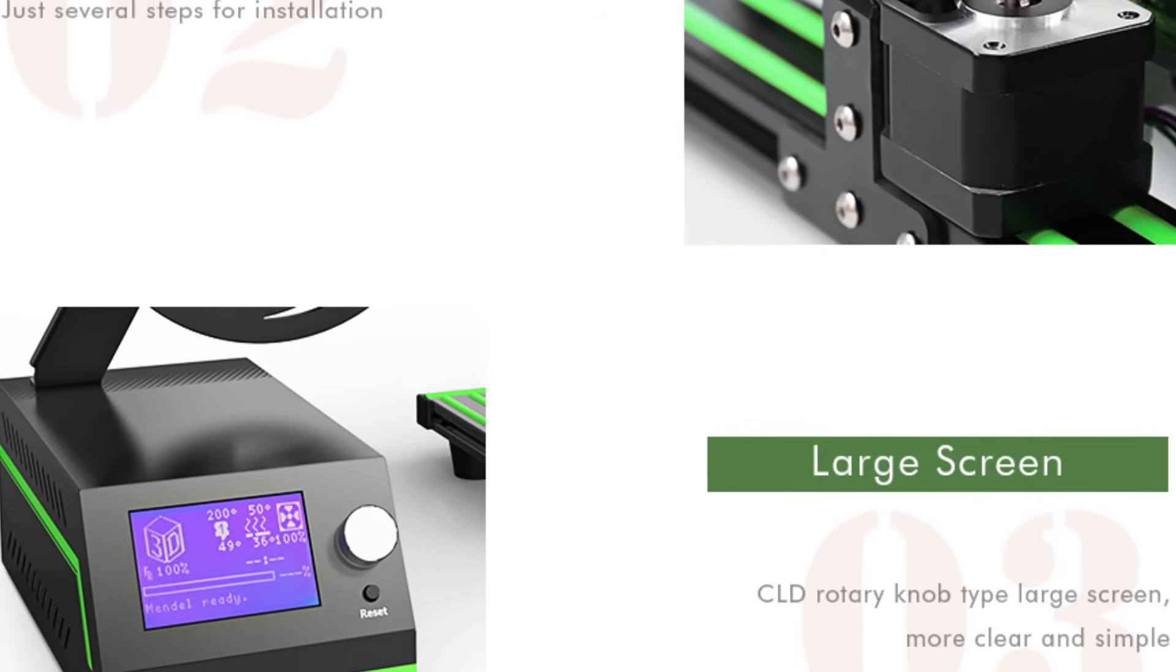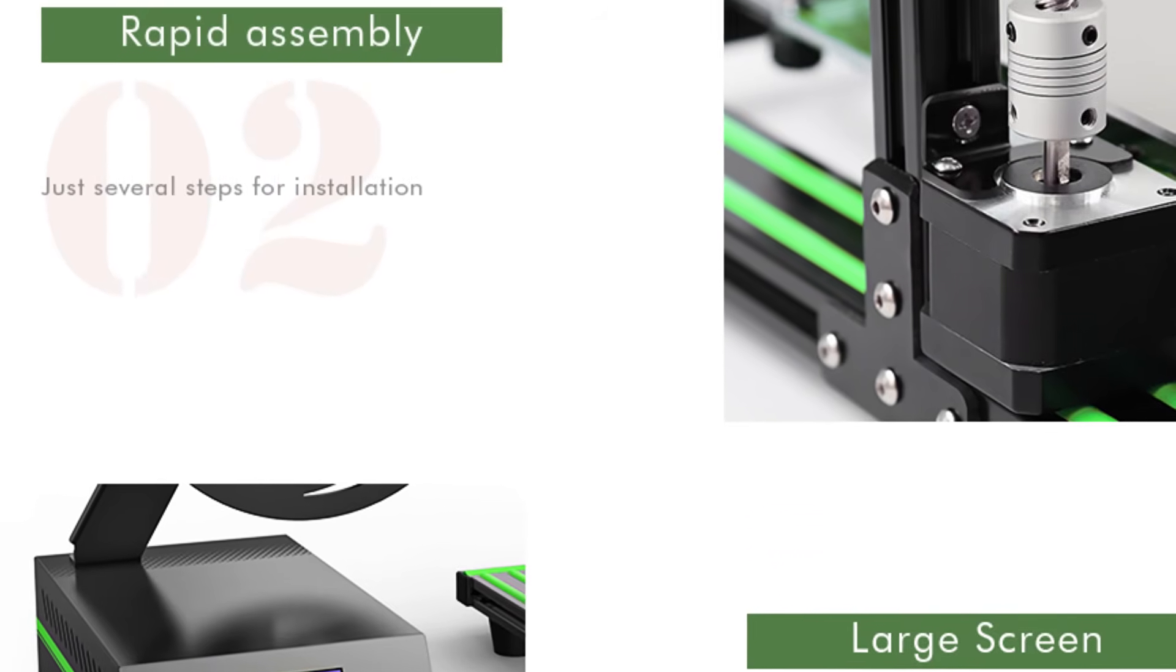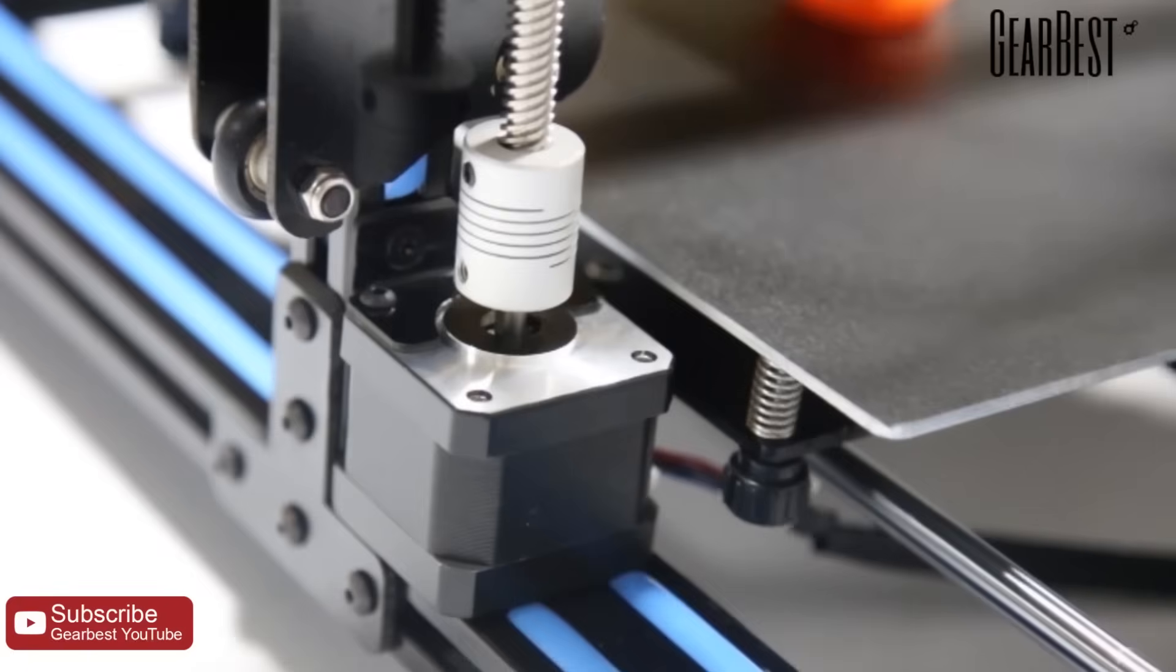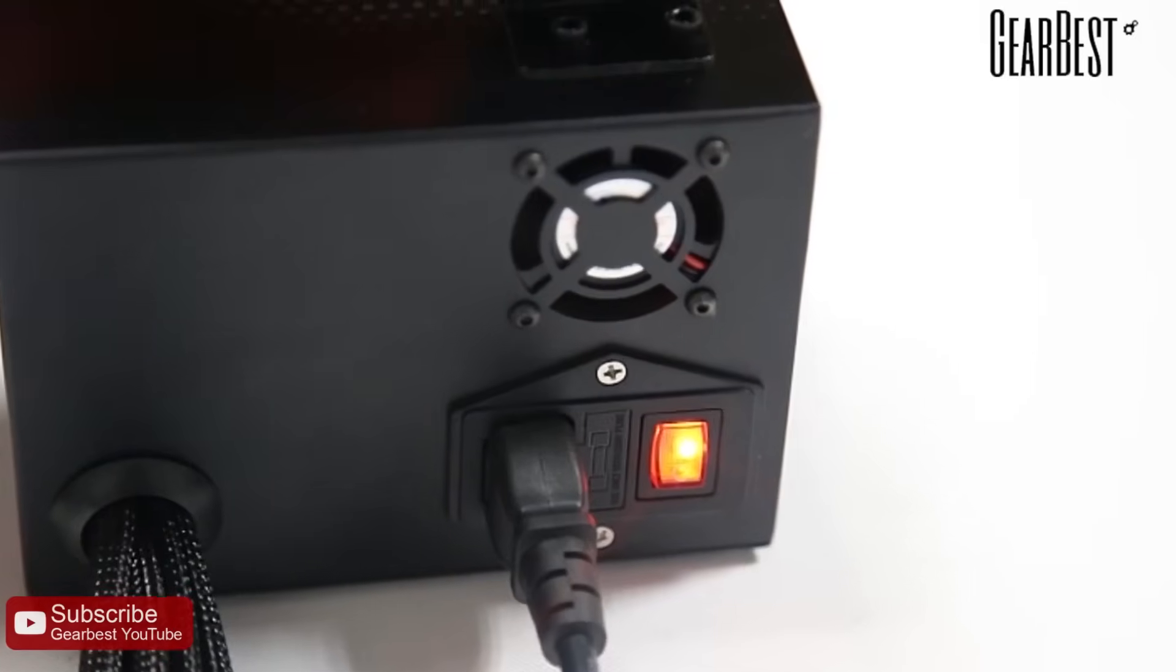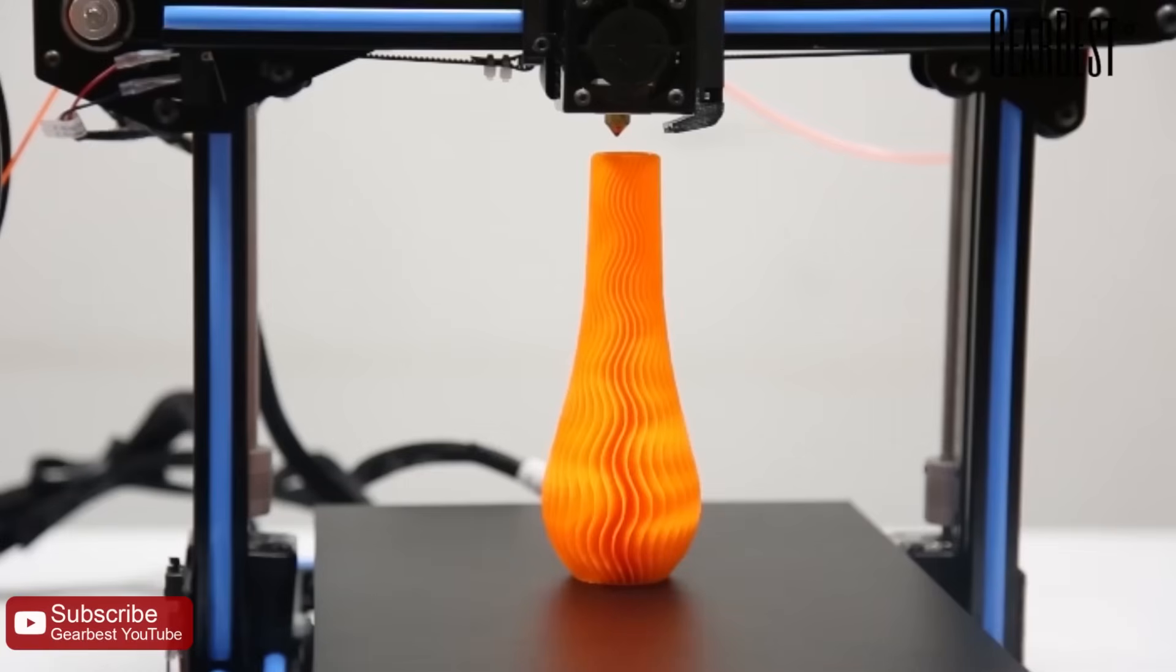Anet E10 comes with an LCD display, unlike previous models of the company. An integrated display is always welcome, and it helps you understand what you're working with.